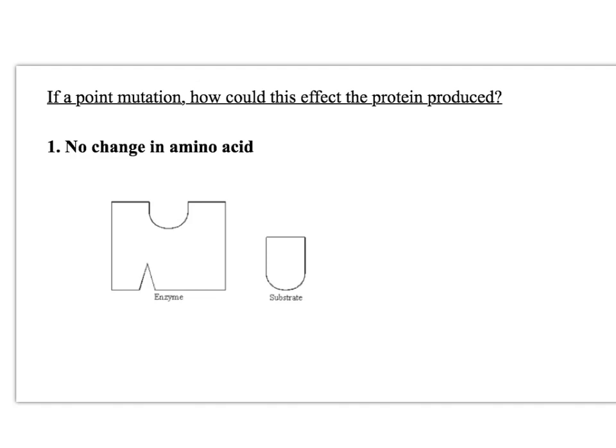Sometimes questions try to trip you up, so let's go through three examples of what could happen if you have a point mutation affecting one triplet and one amino acid. Because of the degenerate code, after a substitution it could cause no change in amino acid. If there's no change in amino acid, the hydrogen, ionic, and disulfide bonds will form in the same place, giving the same shaped active site, so the substrate would still fit, still bind, still complementary shapes.